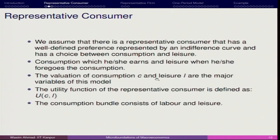The evaluation of consumption C and leisure L are the two important variables in this model. The utility function is represented as U(C, L). For simplicity, we capture both labour and leisure into the consumption bundle of the representative consumer. Both consumption and leisure are normal goods — when income increases, you do not substitute away from them, unlike inferior goods.